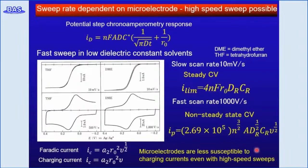The change in the voltammogram with increasing scan rate is shown here. In the case of a low-speed scan rate, a steady-state sigmoidal curve is observed with a limiting current response. But when the scan rate increases, the CV changes to a non-steady-state peak shape. Since the double layer charges quickly with a microelectrode, the charging current is less likely to overshadow the Faradaic current, even at fast scan rates. Therefore, using a microelectrode is recommended for fast-scan-rate experiments.